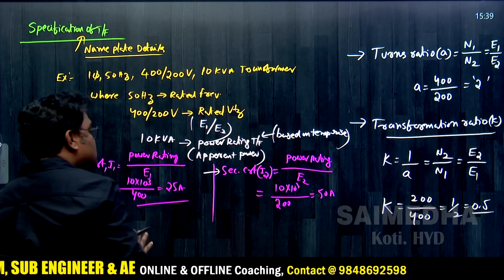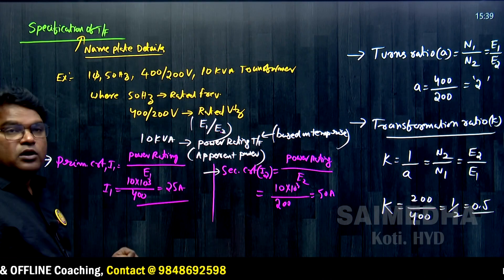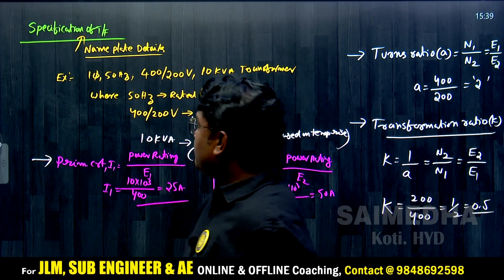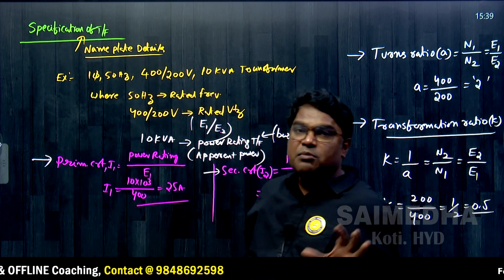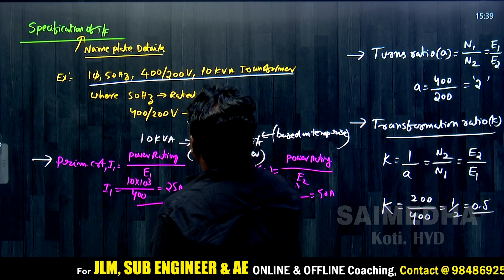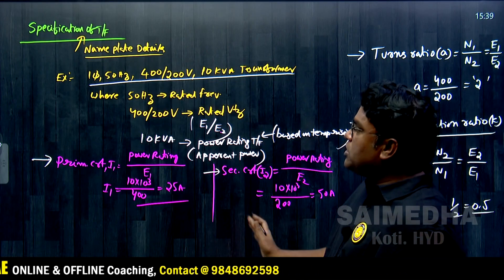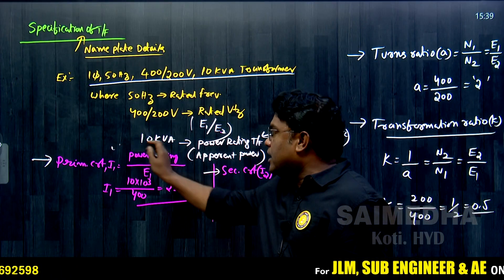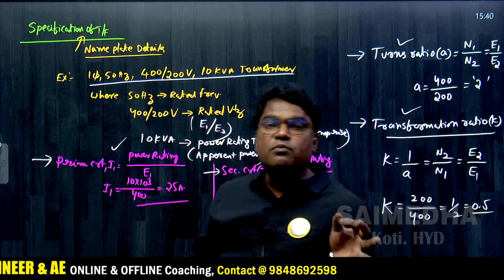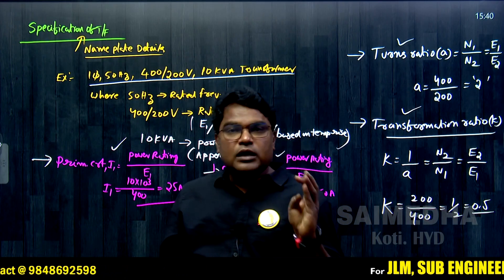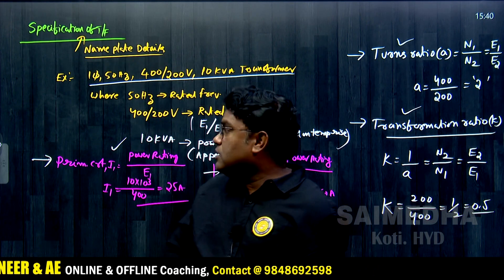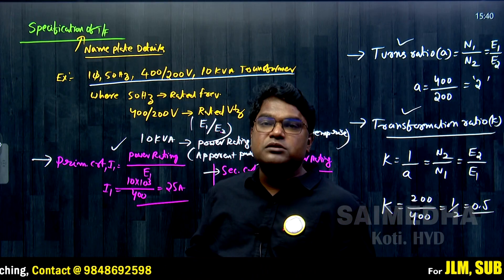So from the nameplate specification of a single-phase, 50 Hz, 400/200 V, 10 kVA transformer, we can determine: primary current, secondary current, turns ratio, and transformation ratio. This concludes the discussion on transformer specifications and classifications.